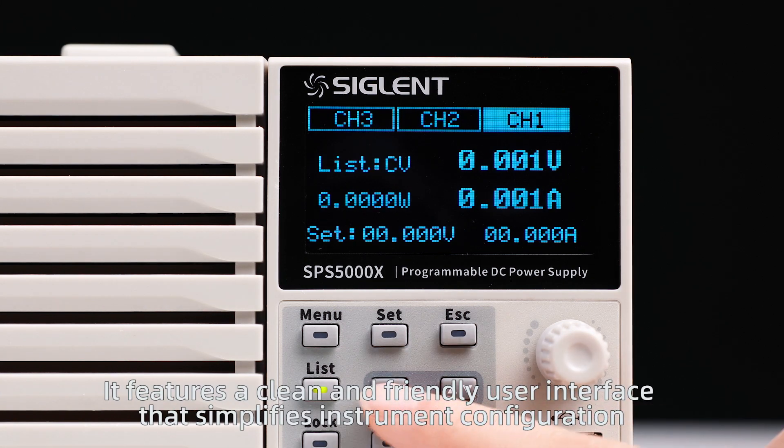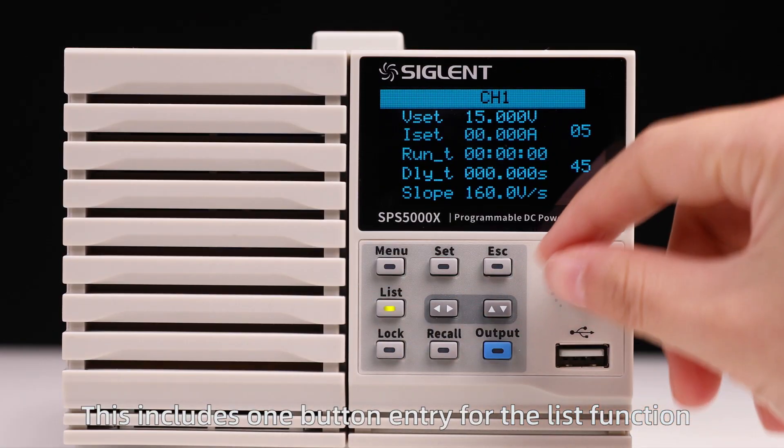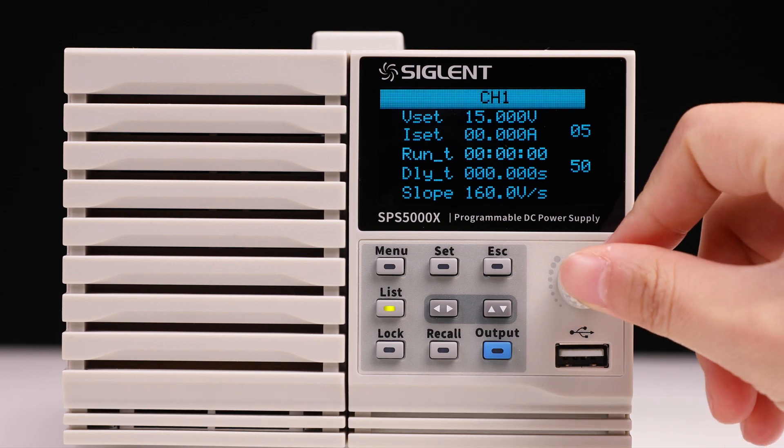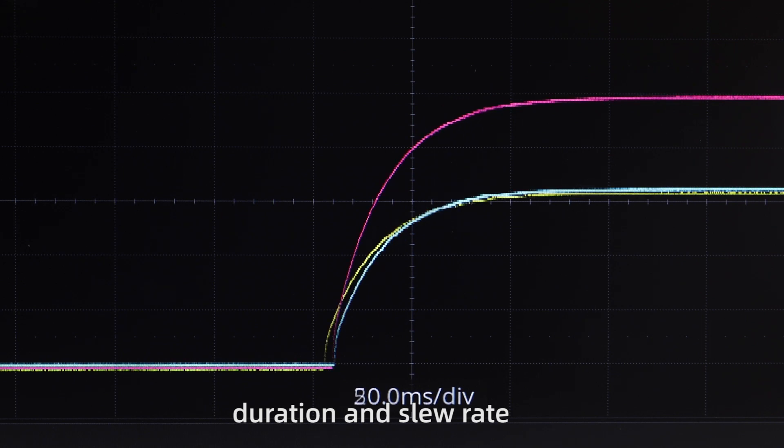It features a clean and friendly user interface that simplifies instrument configuration. This includes a one-button entry for the list function which supports up to 50 steps of sequenced operations. Each step has a user-defined output delay, duration, and slew rate.